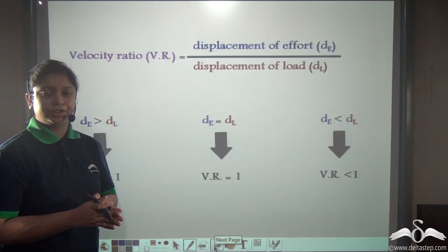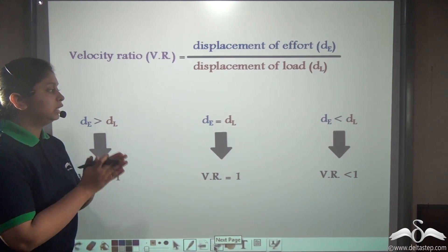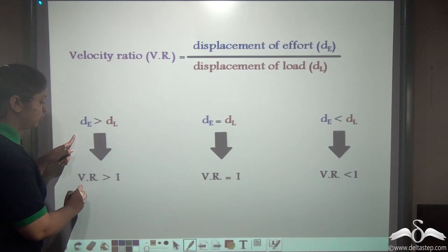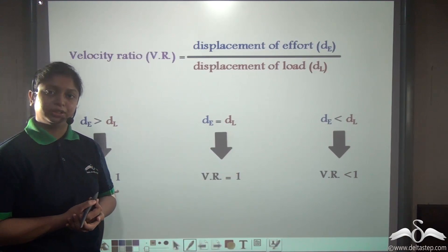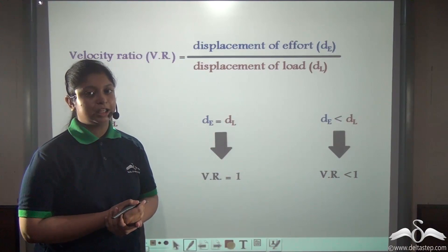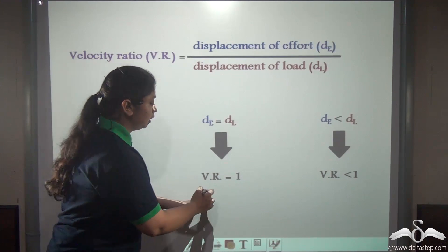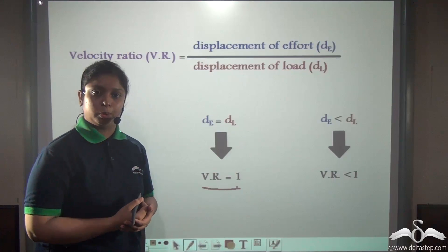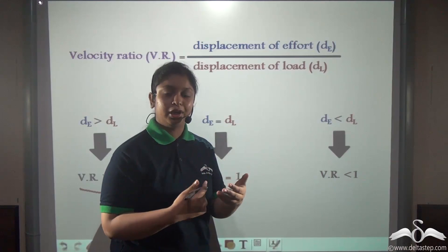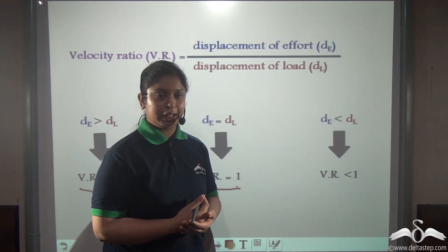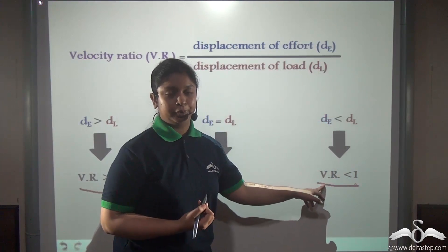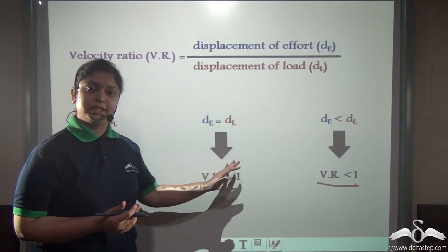There can be three conditions for velocity ratio. The displacement of effort can be greater than the displacement of load — in that case velocity ratio would be greater than 1. There might be times when the displacement of effort is equal to the displacement of load, in which case velocity ratio would equal 1. And it might be so that the displacement of effort is lesser than the displacement of load, so velocity ratio would be less than 1. Now let's see some examples which will prove this fact.